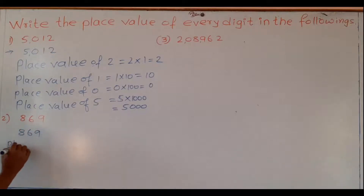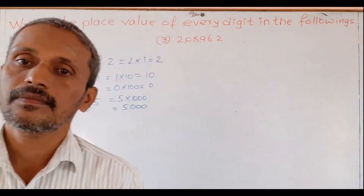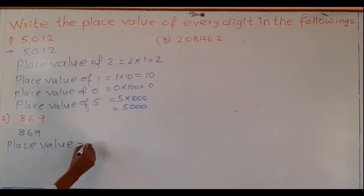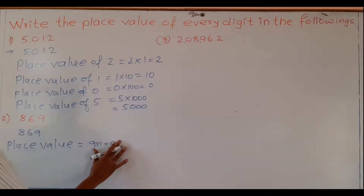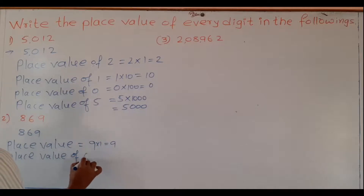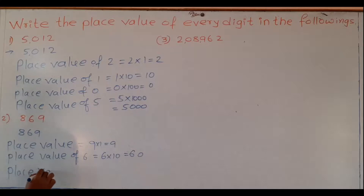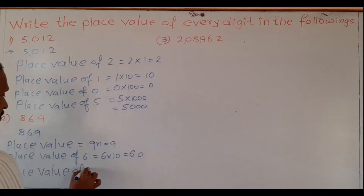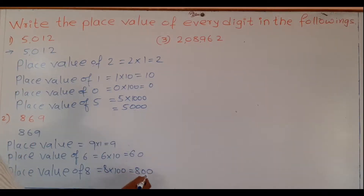In the number 869: place value of digit 9 is 9 × 1 = 9. Place value of 6 is 6 × 10 = 60. The place value of 8 — 8 is in the hundreds place — so 8 × 100 = 800. So these are the place values of 8, 6, and 9 in the number 869.